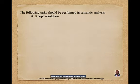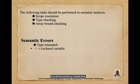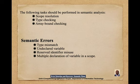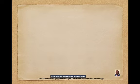These rules are set by the grammar of the language and evaluated in semantic analysis. The tasks performed in semantic analysis include scope resolution, type checking, and array bound checking. Semantic errors can include type mismatch, undeclared variable, reserved identifier misuse, multiple declaration of a variable in a scope, and accessing an out-of-scope variable, and actual versus formal parameter mismatch.